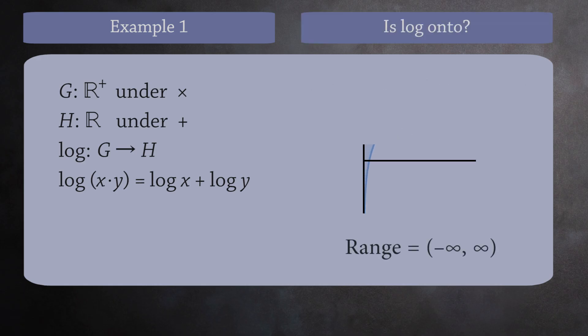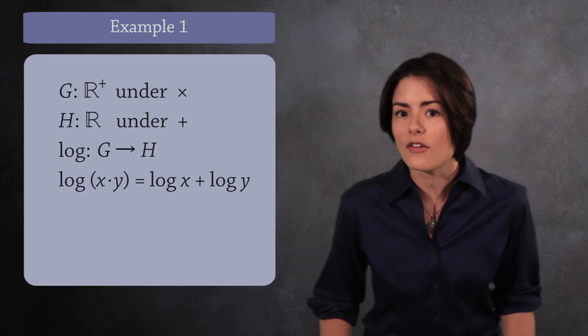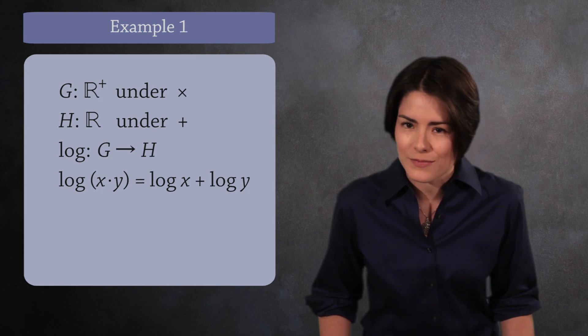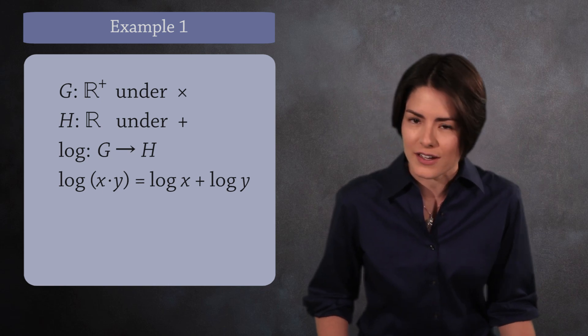Next, the range of the log function is all real numbers, so this function is onto. So in this example, the log function is a homomorphism and a bijection. That makes it an isomorphism. These two groups are isomorphic.